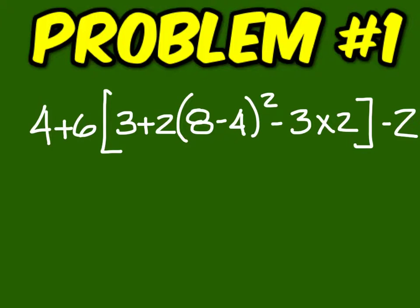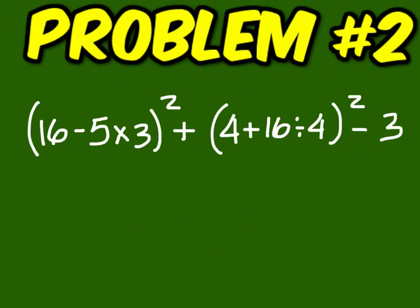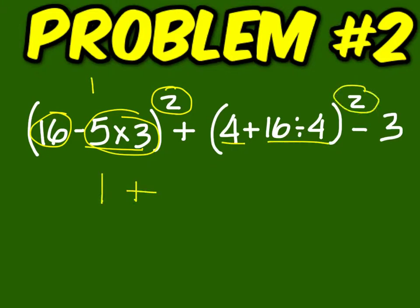Everybody had that answer? It should be 176. This is 16 minus 15, so that's 1, and you square it to get 1. That's 4 plus 4 is 8, and squared is 64, and then minus 3. You should come up with 62.